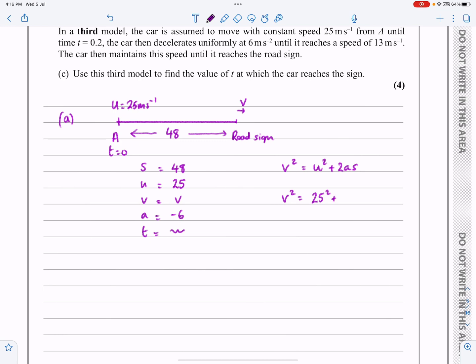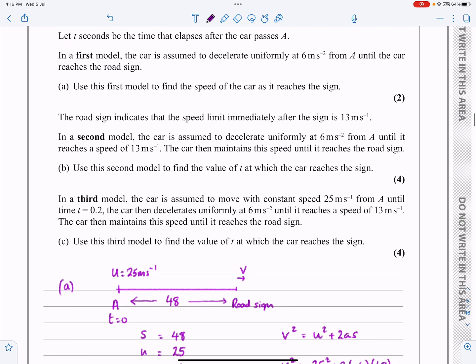It's just a matter of sticking everything in now, and hopefully it'll work out nicely for us. I've got 25 squared, 2 lots of, be careful here, minus 6 times 48. So V squared, if you calculate all of that, works out to be 49. If V squared works out to be 49, that's not an accident then, is it? V just works out to be equal to 7 metres per second. I'm happy with that first part, the first model that we've done.